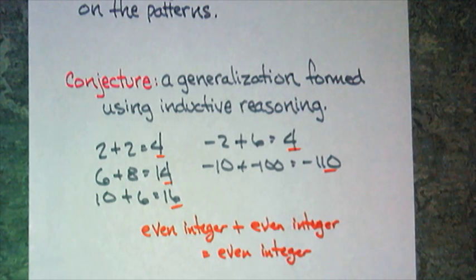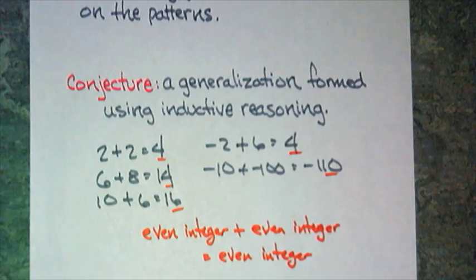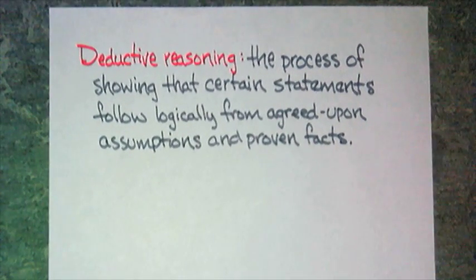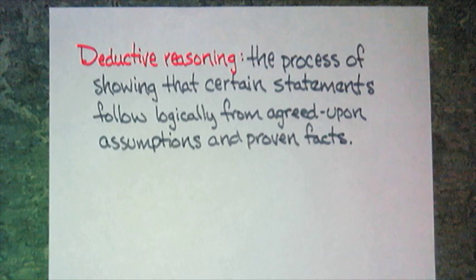If I want to show that it has to work, then that's going to be a different type of reasoning. That type of reasoning is called deductive reasoning. And deductive reasoning is the process of showing that certain statements follow logically from agreed upon assumptions and proven facts.